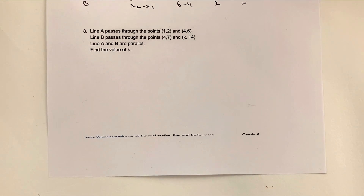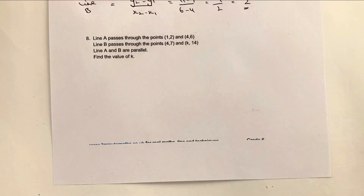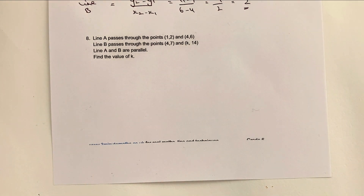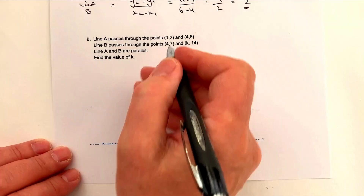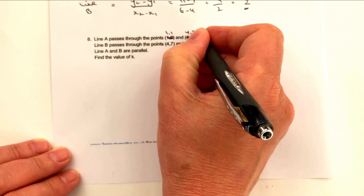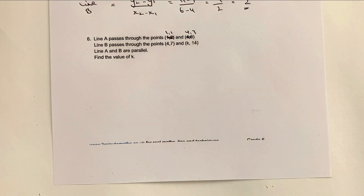Final question, number eight. It's been a longer video than expected. Line A passes through (1, 1) and (4, 7) — I need to correct that on the worksheet, apologies. Let's look at line A.